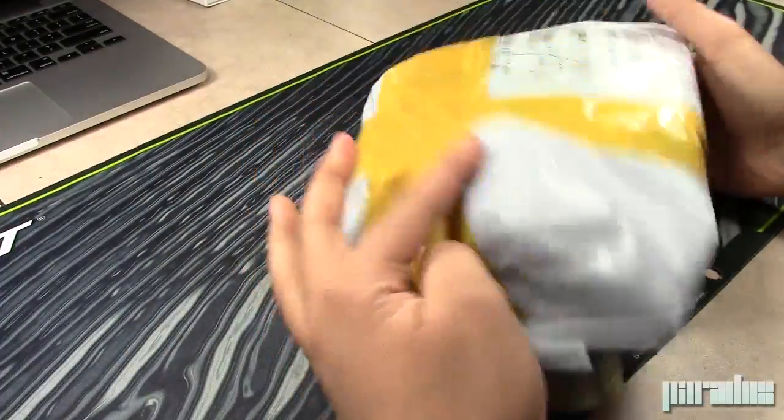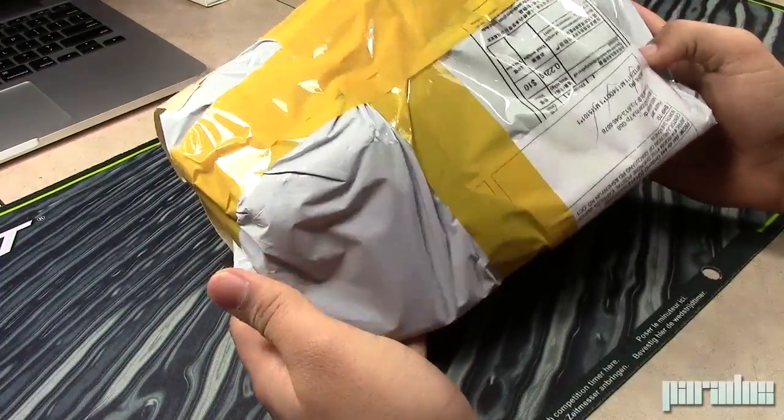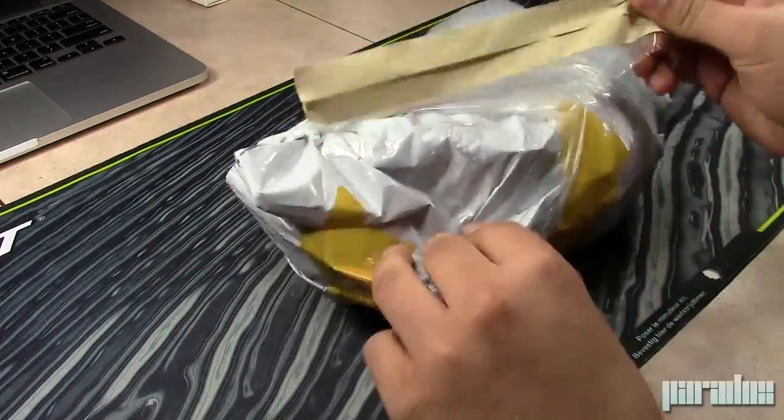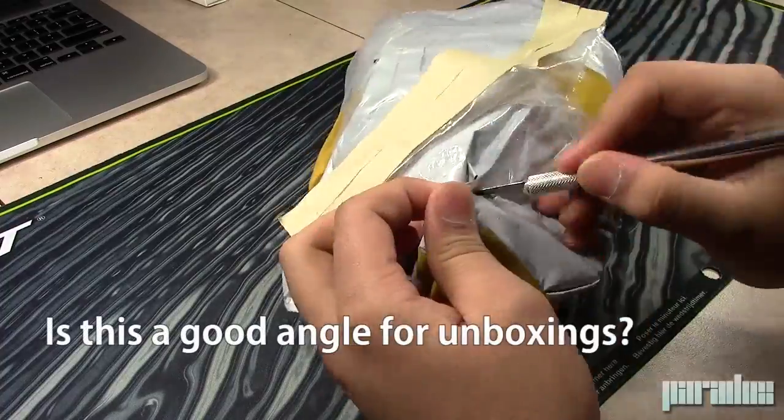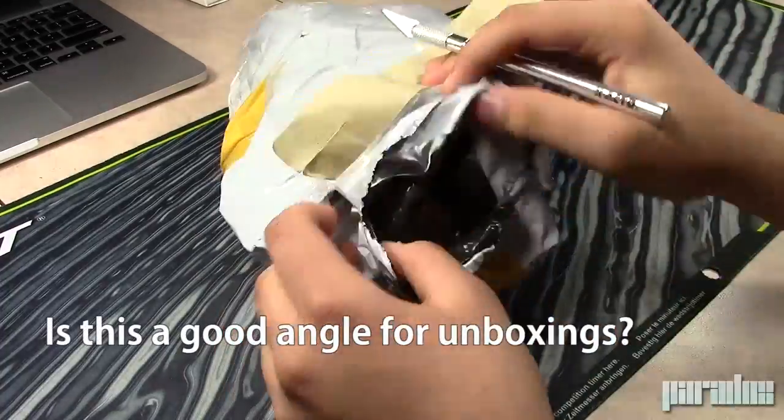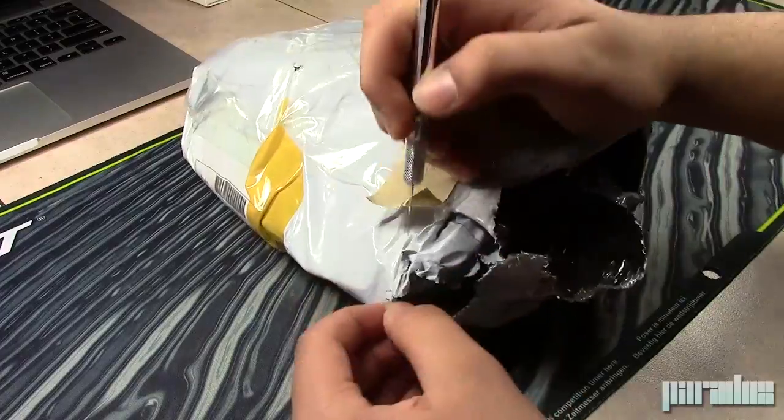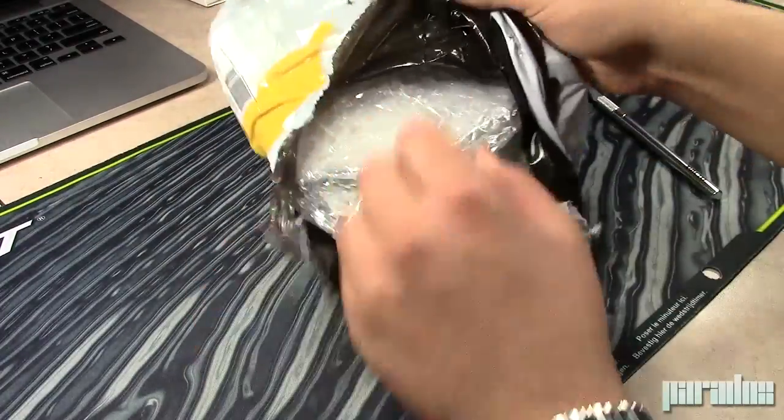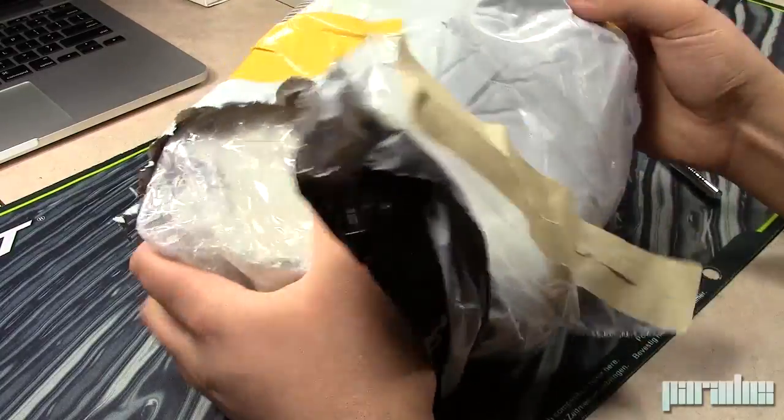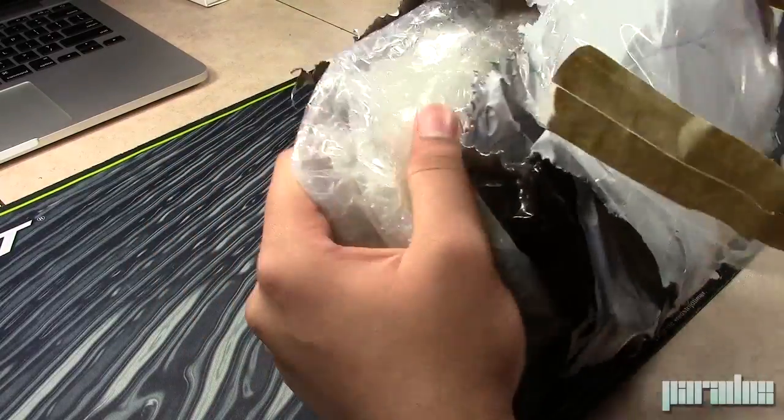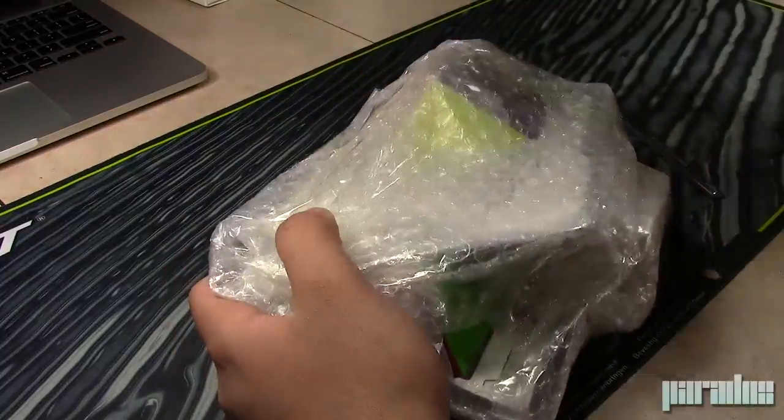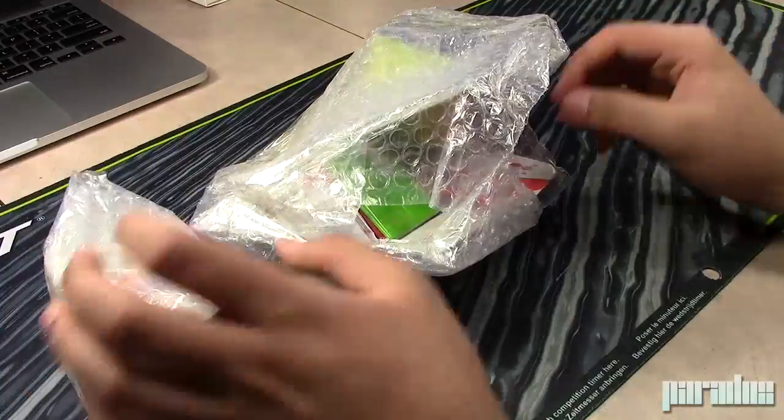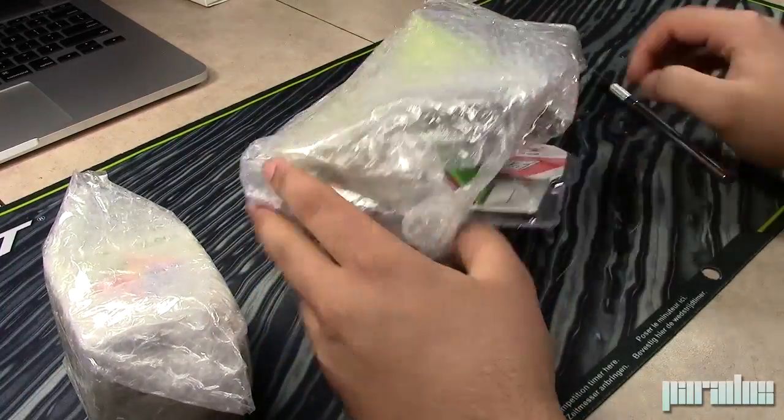Inside that package was another package, and it's very wrapped up with lots of packaging. It's been very well packaged. So inside here should be a YJ YuLong and a Cyclone Boys 2x2 and 3x3.